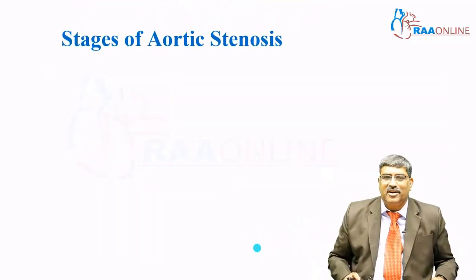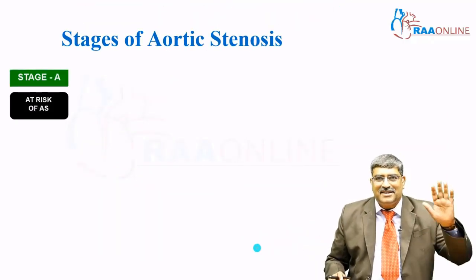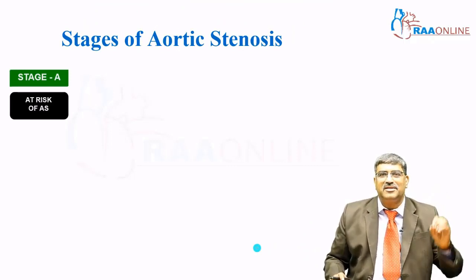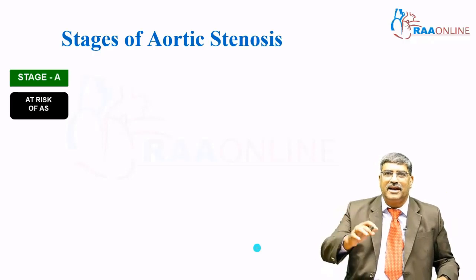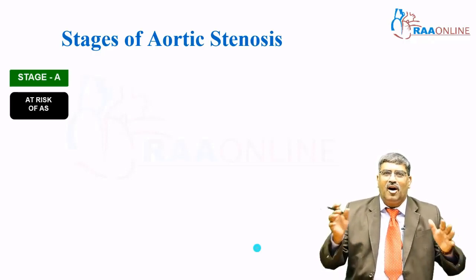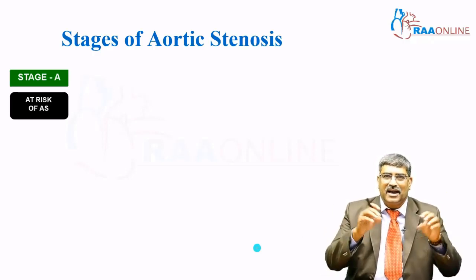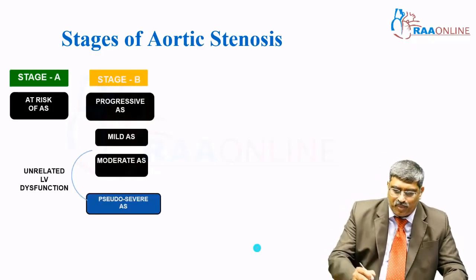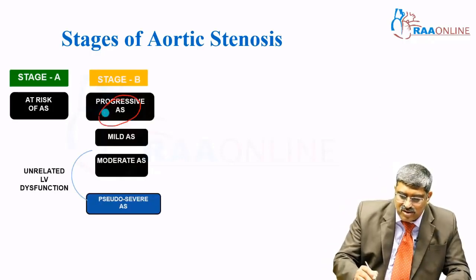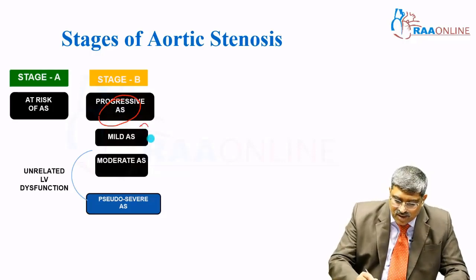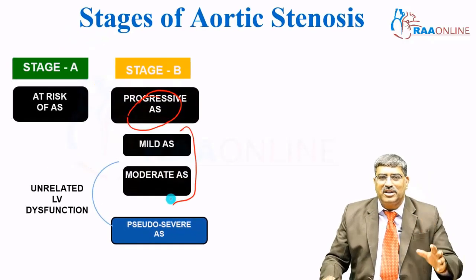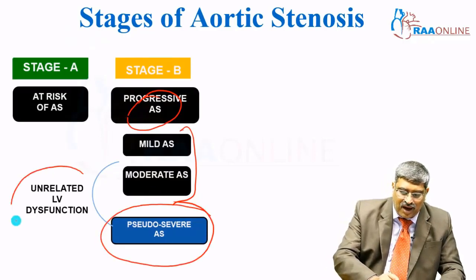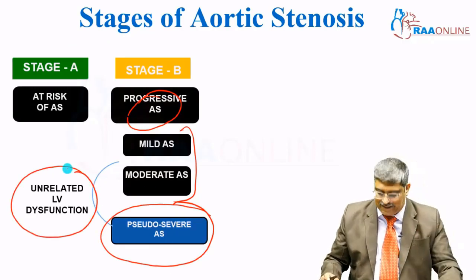Coming to a different staging variety. Stage A is 'at risk' of aortic stenosis — risk factors include hypercalcemia or other conditions which can increase calcium deposition across the aortic valve. Stage B is progressive aortic stenosis, which includes mild-to-moderate aortic stenosis or a pseudo-AS where unrelated LV dysfunction exists.